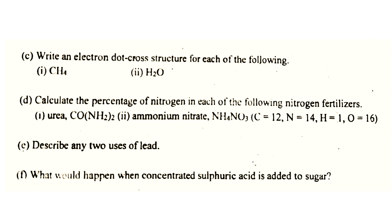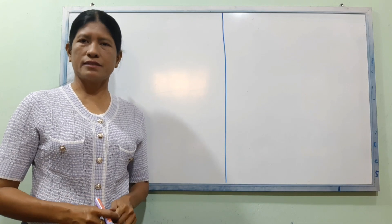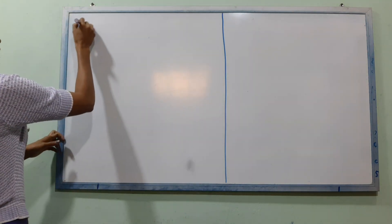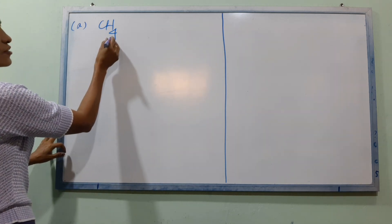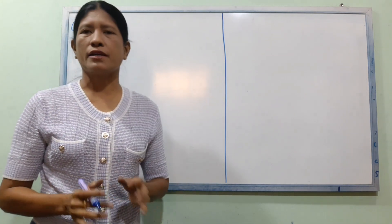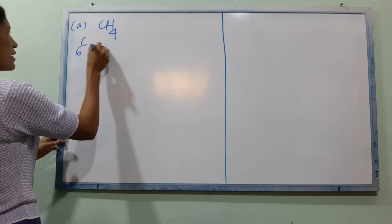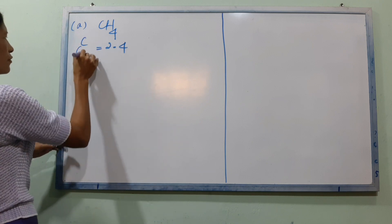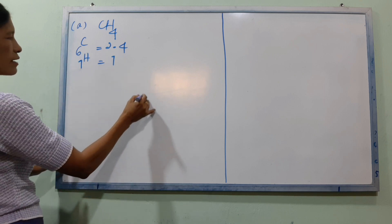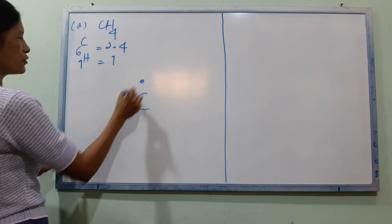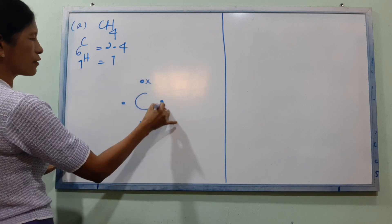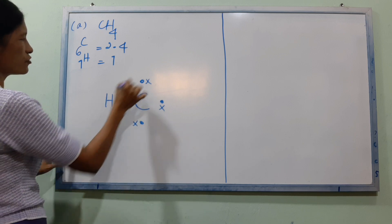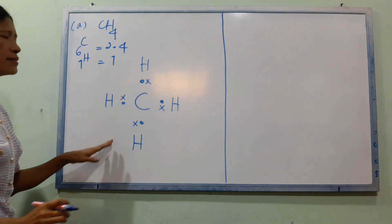Number C: Write an electron dot cross structure for each of the following — number 1, CH₄; number 2, H₂O. We have CH₄ water H₂O and the electron dot cross structure. CH₄ has H, H, H, H — this is the electron cross structure of CH₄.